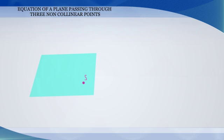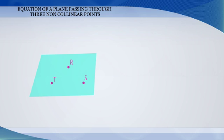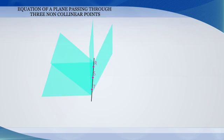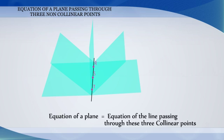Is it necessary that the three points should always be non-collinear? What is the equation of the plane passing through three collinear points? Planes passing through three collinear points resembles the pages of a book, where the line containing the points R, S and T are members in the binding of the book. Therefore, the required equation of the plane will be the equation of a straight line passing through these three collinear points.